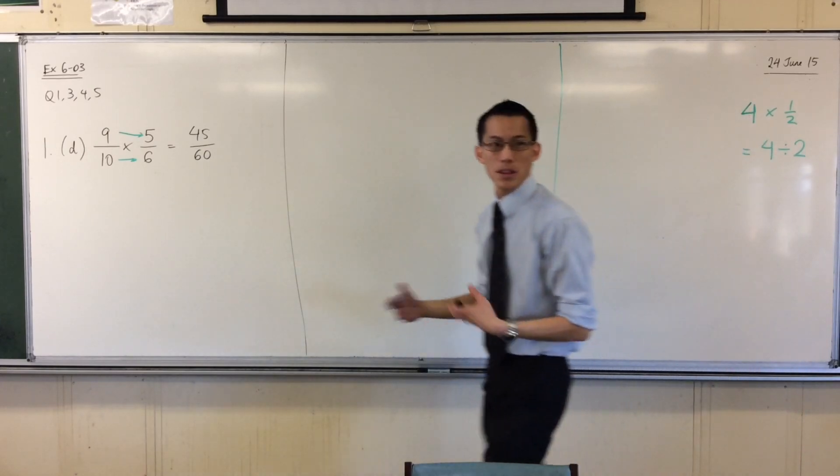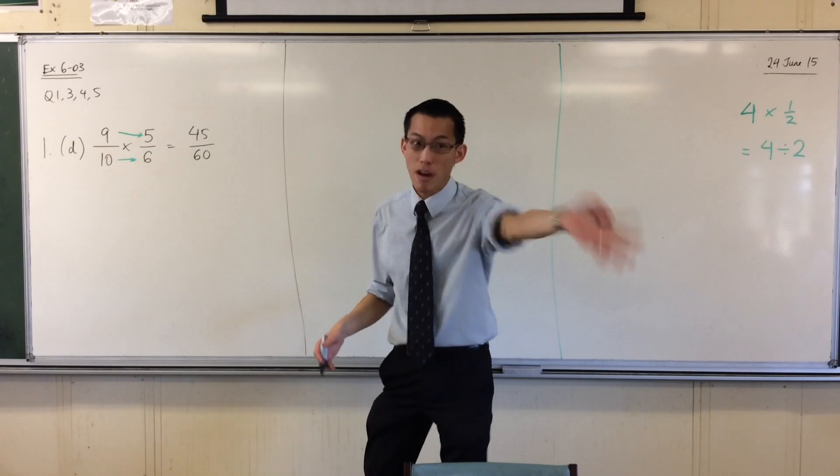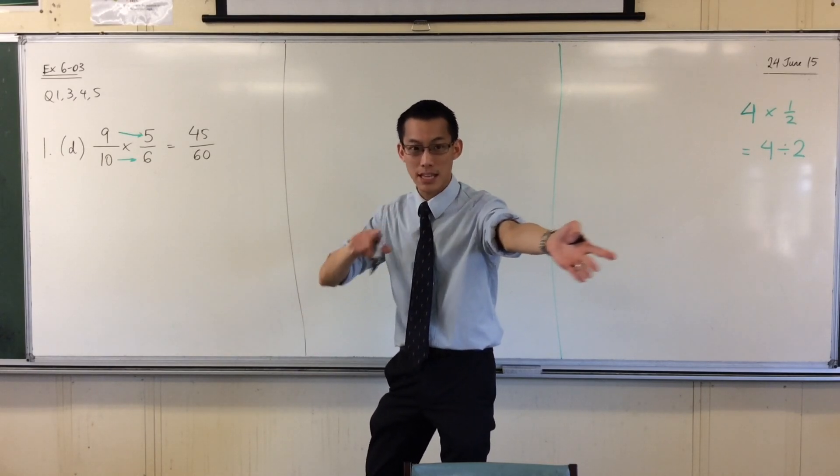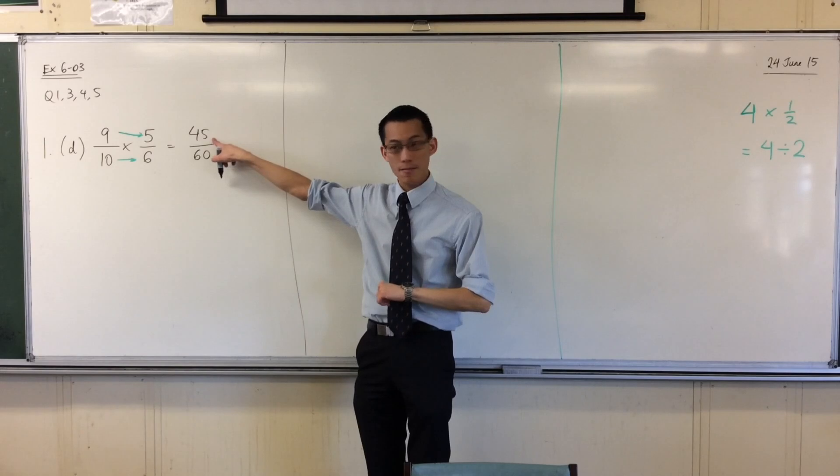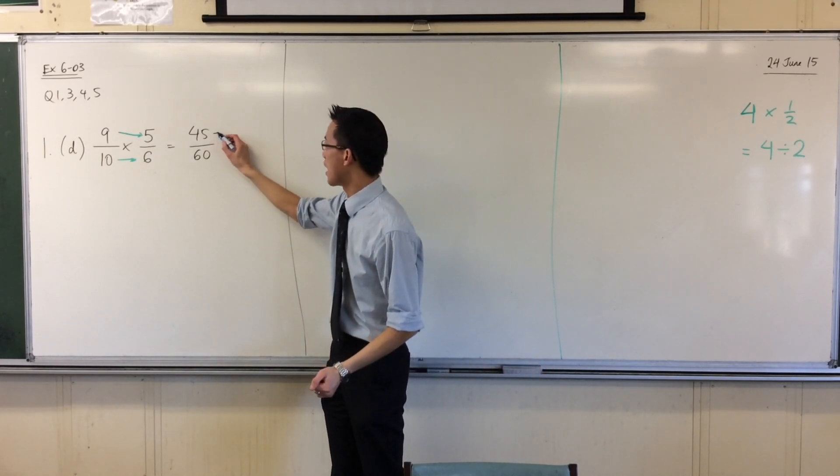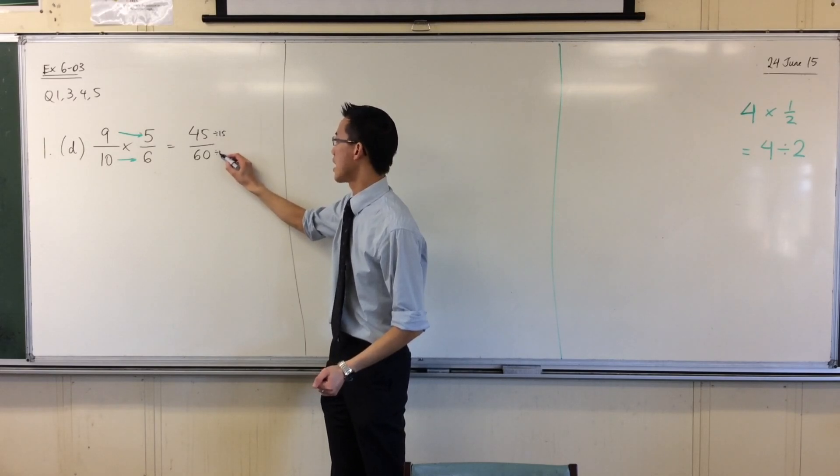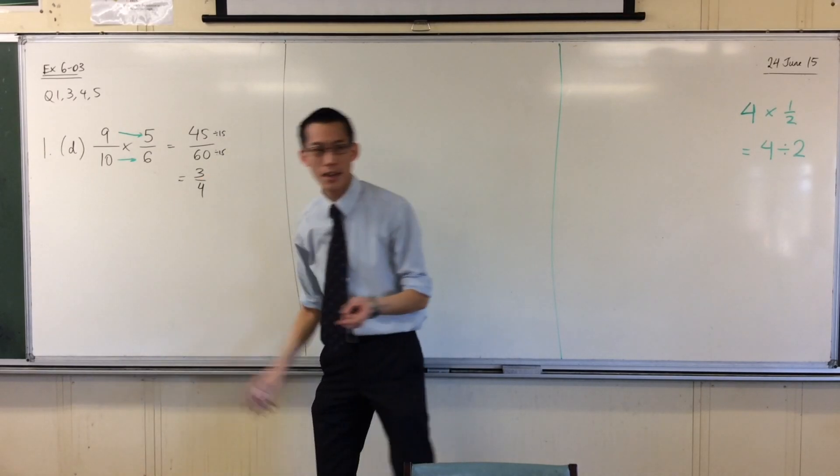6 times 10 is 60. Now, this is correct. The answer is 45 over 60. But we can simplify this a little bit, can't we? Daniel, what do you suggest? You can go straight to 3 over 4 if you see 45 is a multiple of 15 and 60 is also a multiple of 15. So if you divide this one by 15 and you divide this one by 15, you'll get 3 quarters.